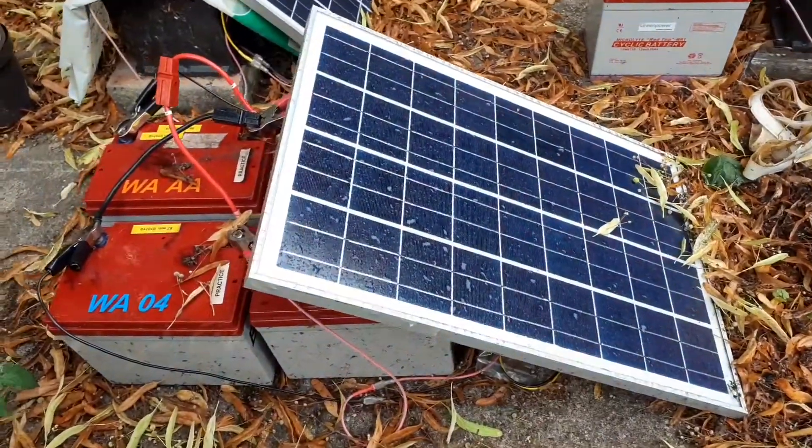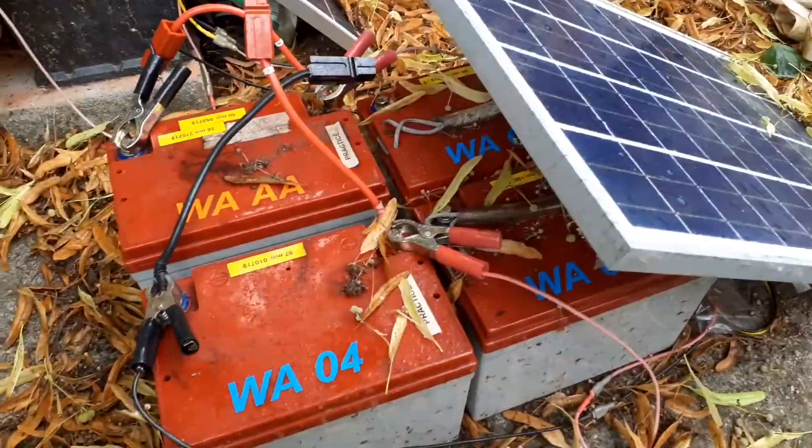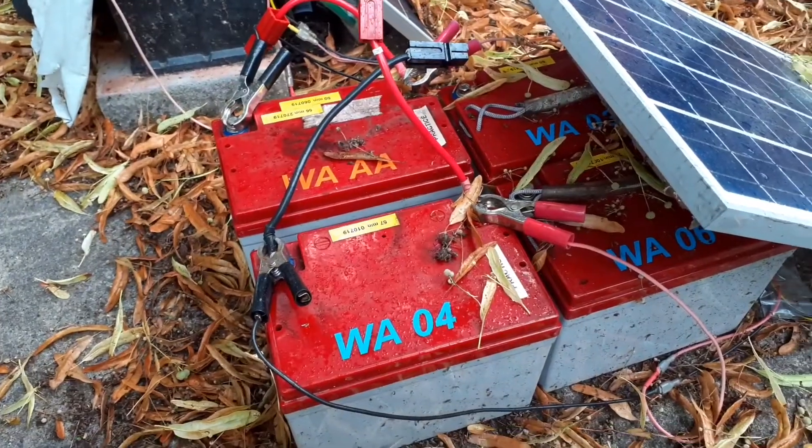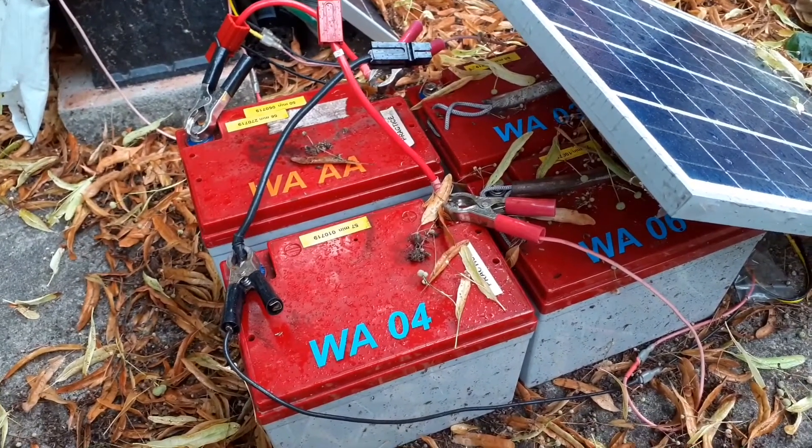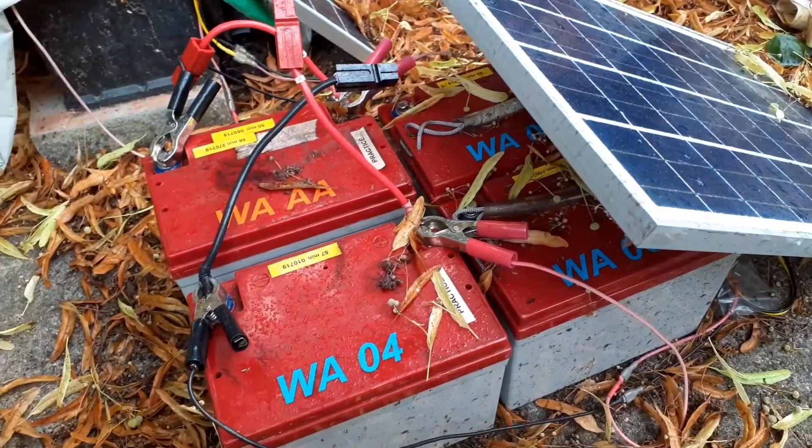I've also got some solar panels, and I can charge two at once with one of the solar panels, but it's quite a slow charge. The fast chargers charge at 8 amps, and this charges about 1 amp.